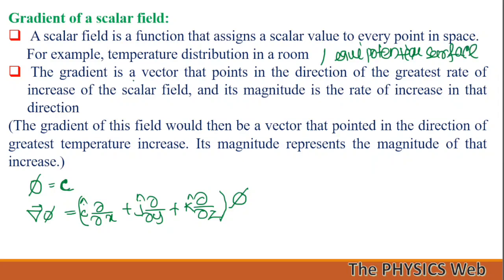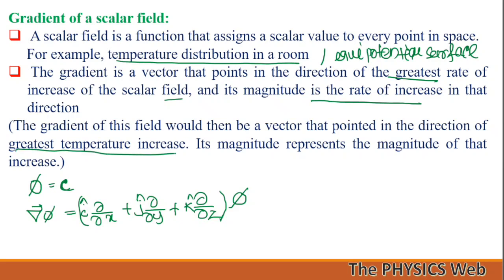The gradient is a vector, and as we know, a vector has both magnitude and direction. The gradient of a scalar function points in the direction of the greatest rate of increase of that scalar field, and its magnitude is the rate of increase in that direction. For the temperature distribution example, the gradient points in the direction of greatest temperature increase, and its magnitude represents the rate of that increase.